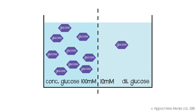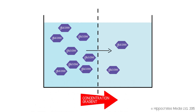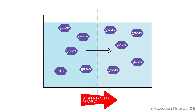The question is: what is the glucose going to do? Clearly there's a concentration gradient for glucose going from left to right, and so glucose is going to tend to cross the membrane into the right-hand compartment, which has the dilute solution. This will carry on until eventually the concentration of glucose on both sides of the membrane is exactly equal.